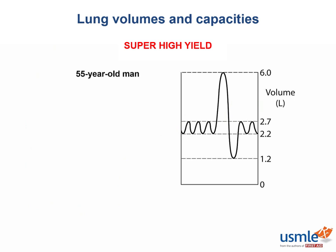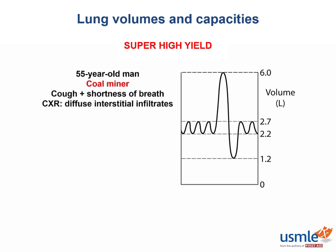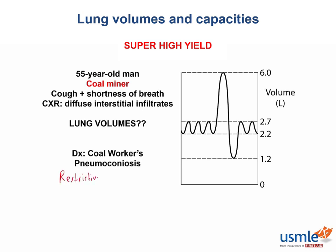You see a 55-year-old coal miner with a long-standing cough and progressive shortness of breath. He has inspiratory crackles, and you see patchy, bibasilar, interstitial infiltrates on the chest X-ray. So what would you expect the lung volumes to be like on pulmonary function testing? Well, this is likely a case of coal workers' pneumoconiosis. All of the pneumoconioses are restrictive lung diseases. In contrast to obstructive processes, restrictive lung diseases are typically characterized by decreased lung volumes, including total lung capacity.